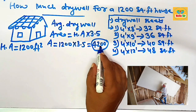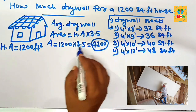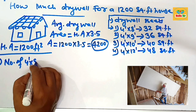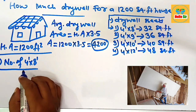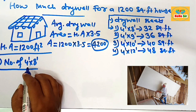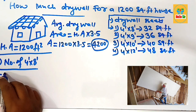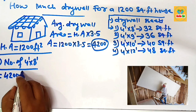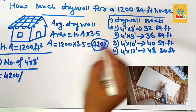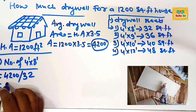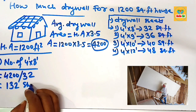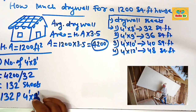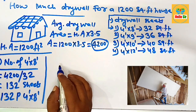To calculate the number of 4 by 8 drywall sheets needed for a 1200 square foot house: take the total area of 4200 and divide by the area of one 4x8 sheet, which is 32. After division, this comes to about 132 sheets. You need approximately 132 pieces of 4 by 8 drywall sheet to cover a 1200 square foot house.